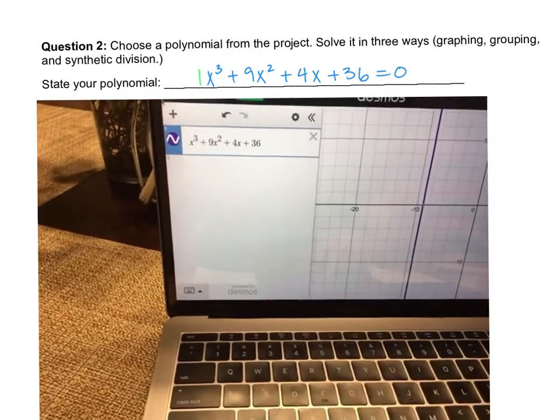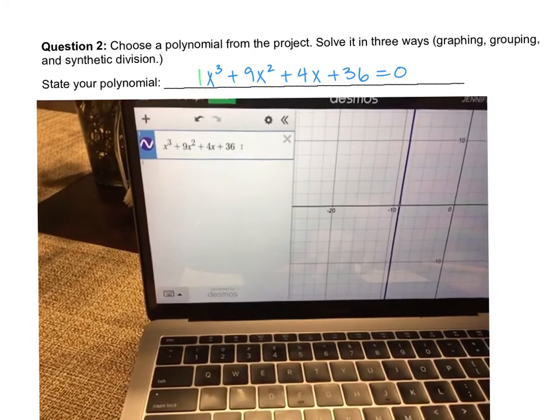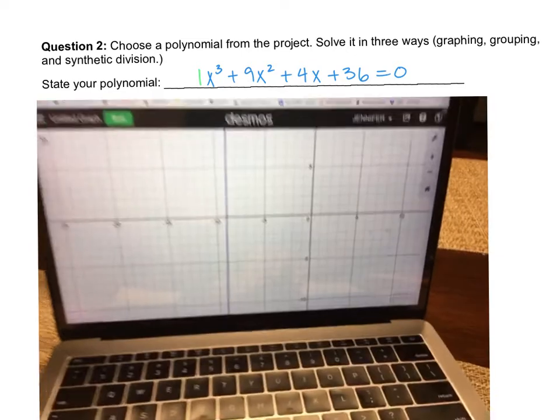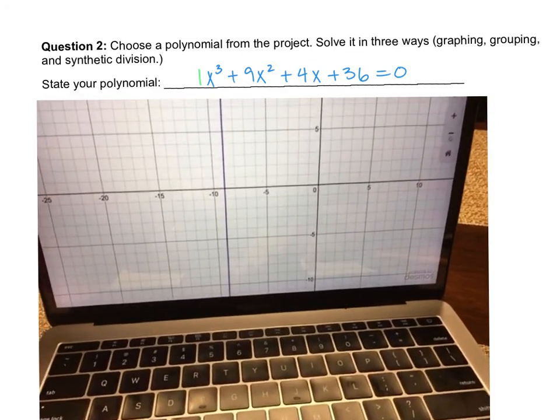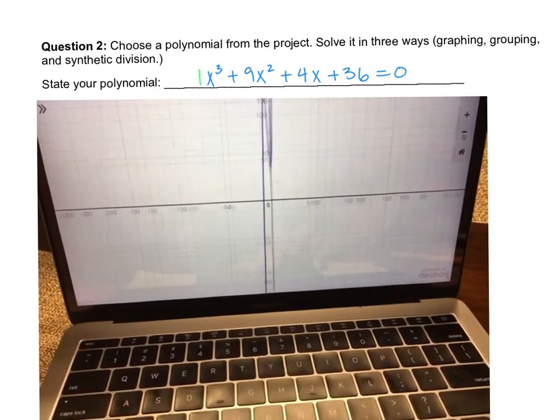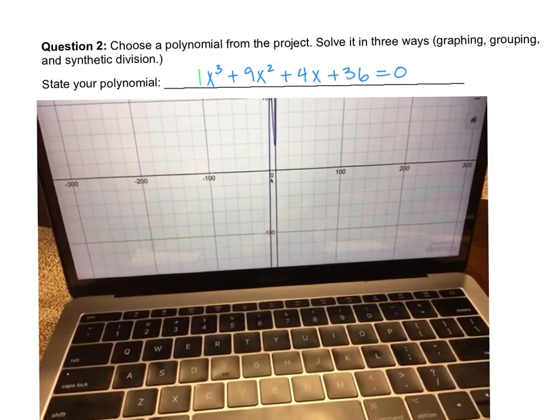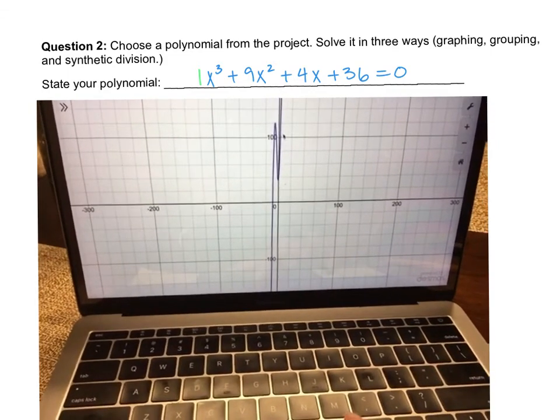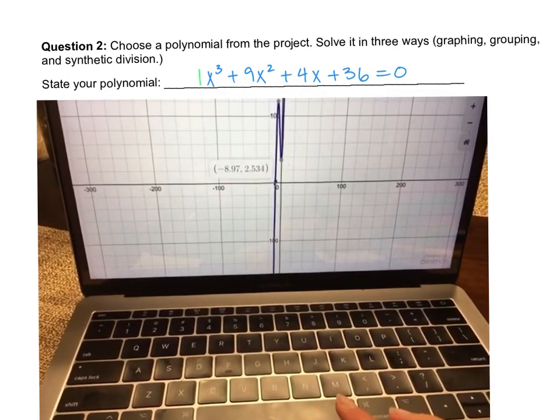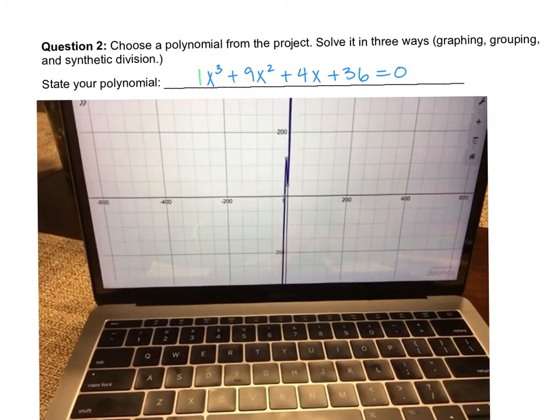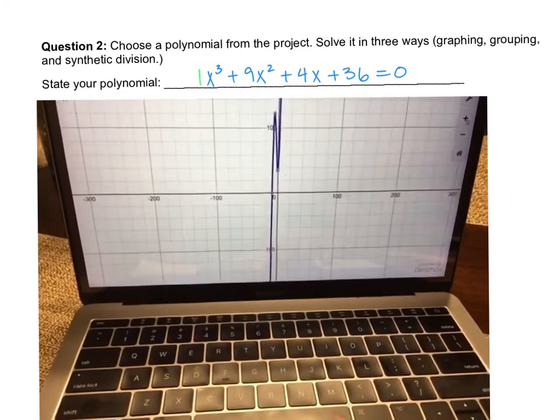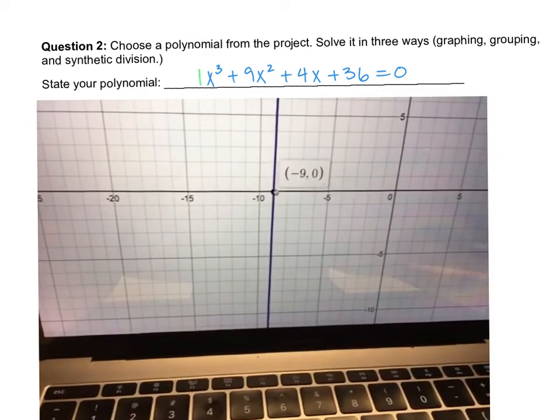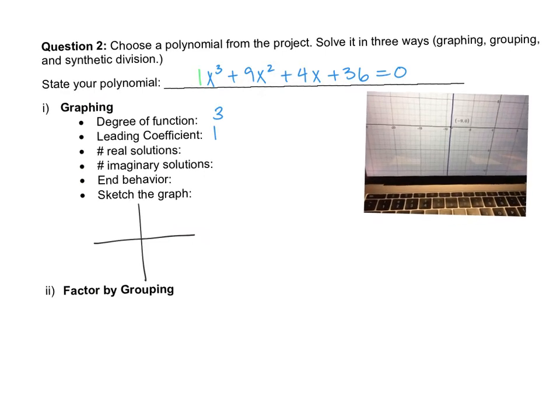So I just literally typed the equation in. Now you don't want to type it in with the equals 0, just the equation. And then what you're going to do is zoom in and out to see where it hits the x-axis. So I'm going to just zoom out to get a clearer picture of what this looks like. So it looks like the end behavior, this side's pointing down and then this side's pointing up and it kind of makes like this wave. But I only see one spot that it hits at. So I'm going to zoom in to that particular spot. Zooming in, looks like it hits it right there at x equals negative 9.